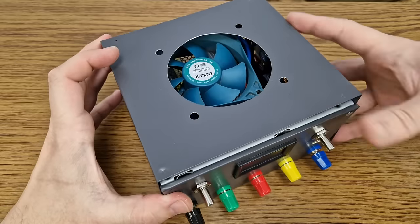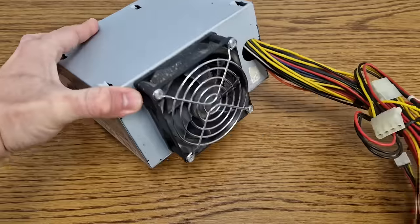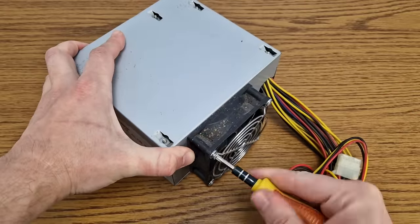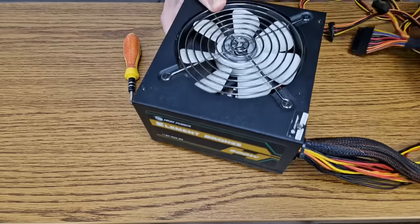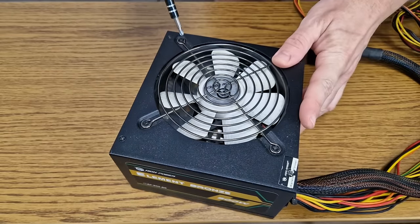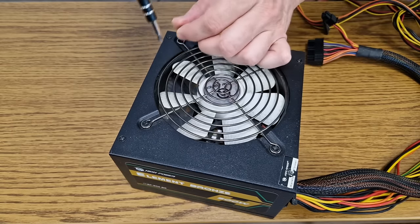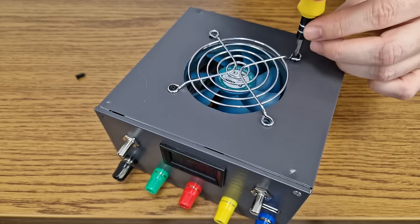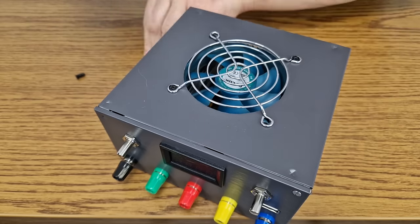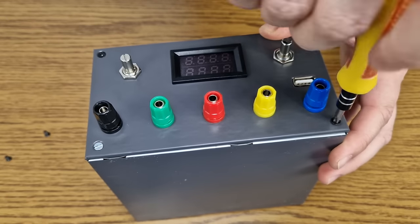I need a protective grill for the 80 millimeter fan. I will salvage it from this broken power supply. And I think it will look better with black screws. So I will take some from another broken power supply. Black screws on the front panel as well.